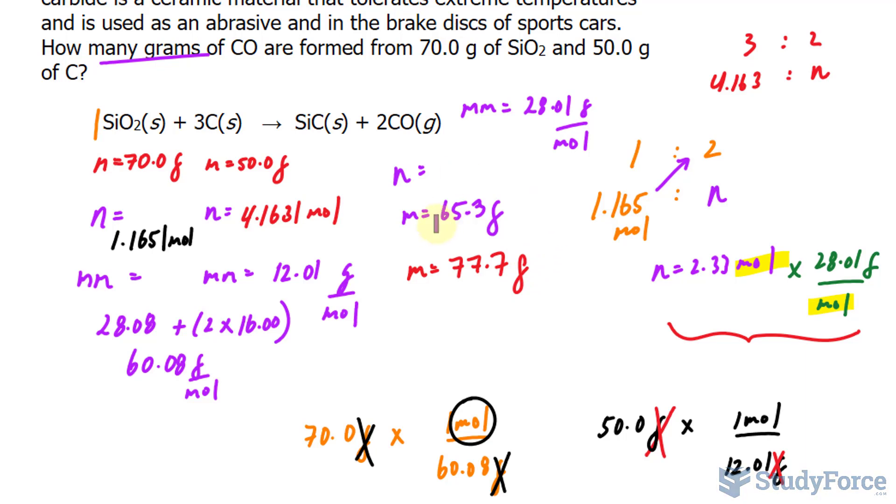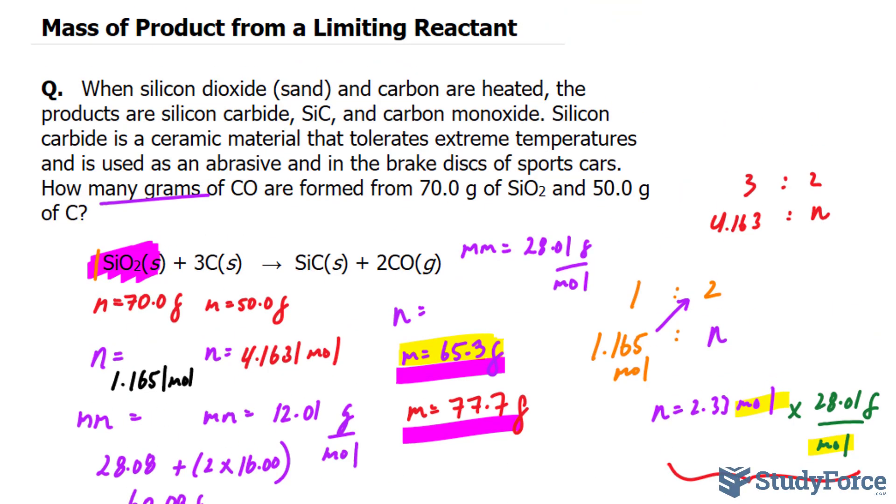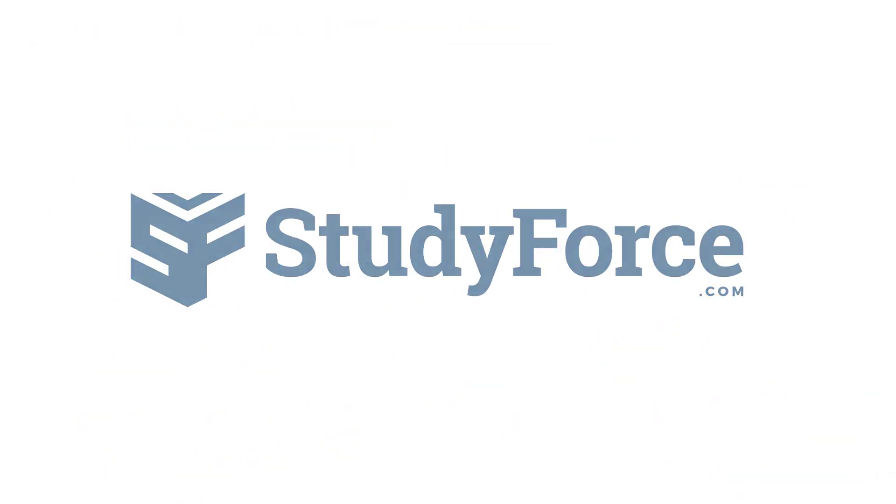So which of these two is smaller? Obviously, it's this one, so this is the limiting reactant, and that right there is the mass that we're looking for in this question. And there you have it. That is how to use the mass of products to find the limiting reactant. Thank you.